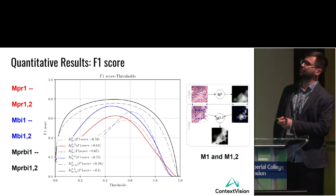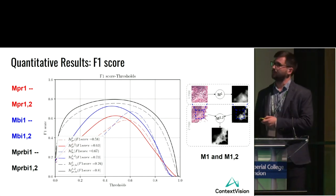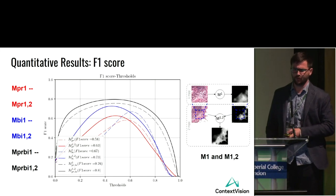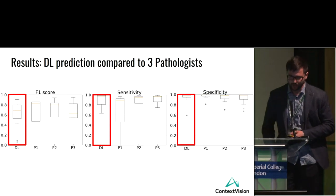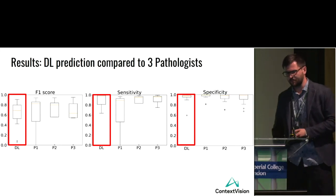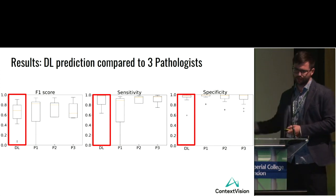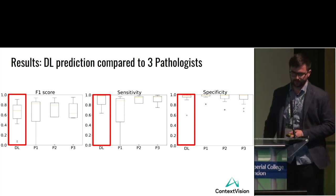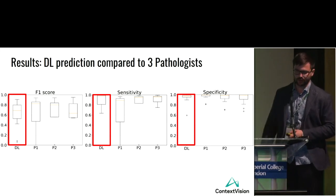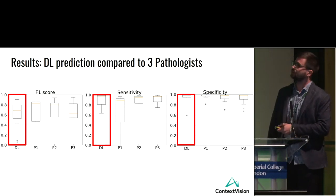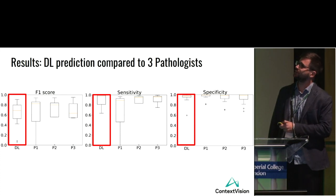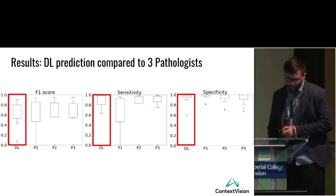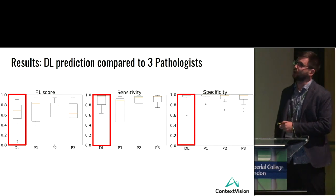The question was: what does this F1 score actually mean — are pathologists happy? We asked three pathologists to annotate our test set independently using only H&E images. We then compared our best compound model's predictions against pathologist annotations for F1 score, sensitivity, and specificity. The performance of our deep learning model is comparable to the pathologists.